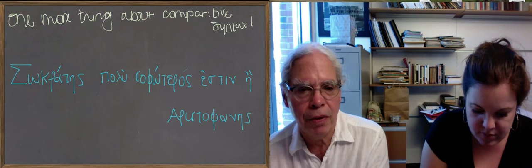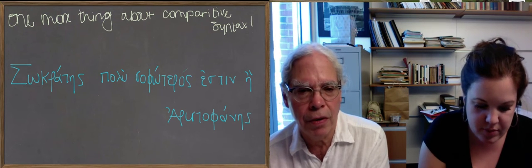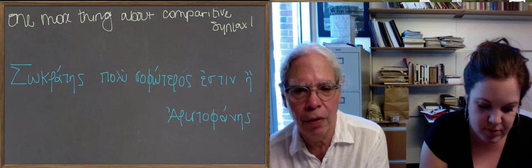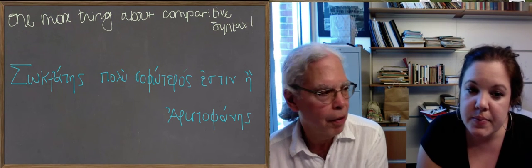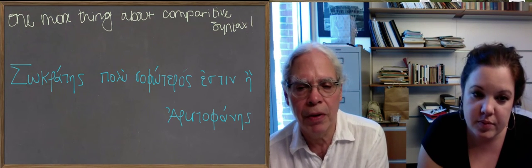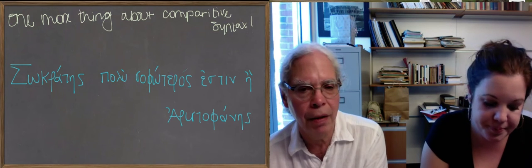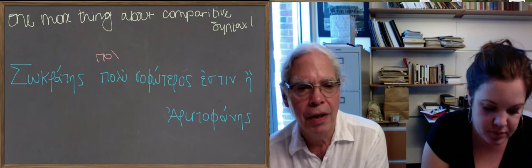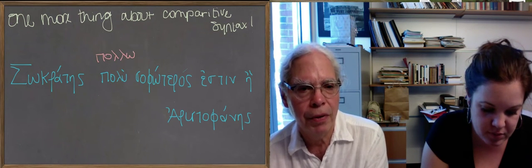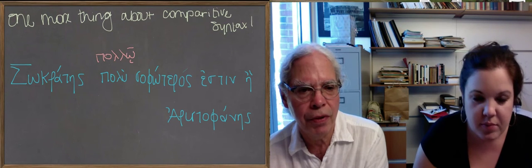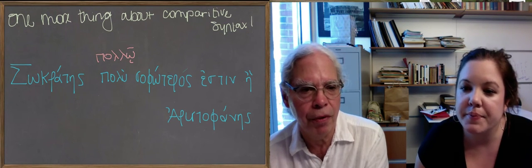So we talked about how you can say Socrates is wiser, and you can also say he's a little or much wiser, and you can do that with an adjective like much in the dative case, by much if you want, but you can also do it with the accusative singular neuter as a standard form.